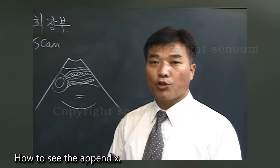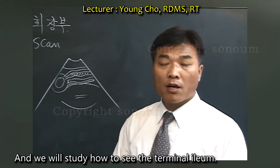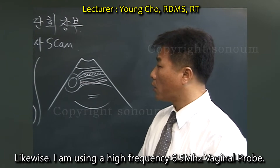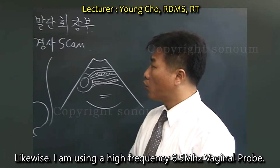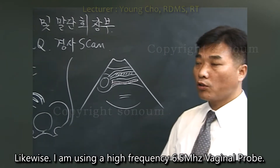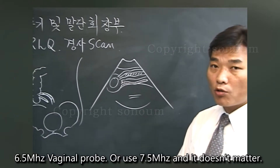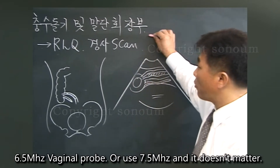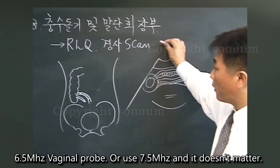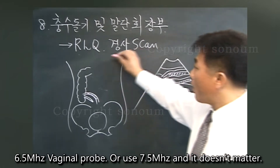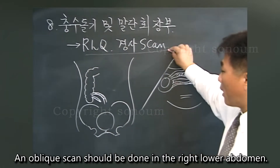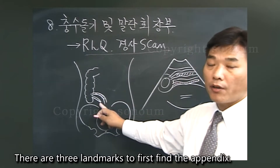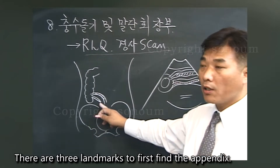We will study how to see the appendix and the terminal ileum. A high frequency 6.5 MHz vaginal probe is used — 6.5 MHz or 7.5 MHz, it doesn't matter. An oblique scan should be done in the right lower abdomen, and there are three landmarks to first find the appendix.